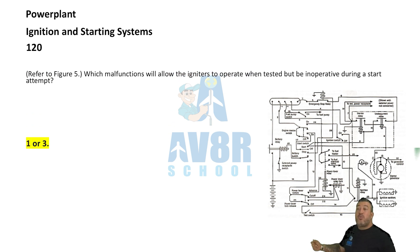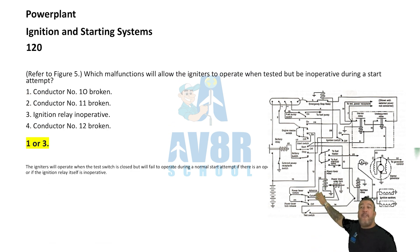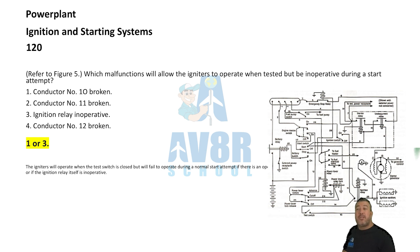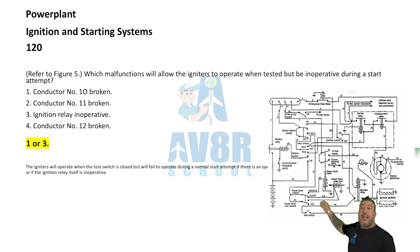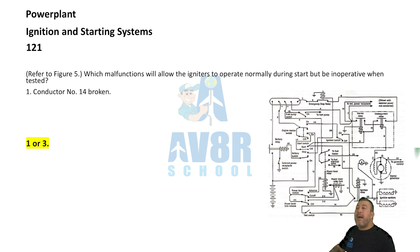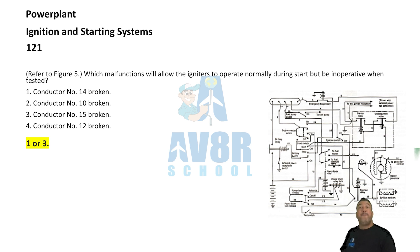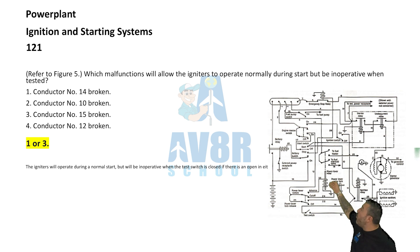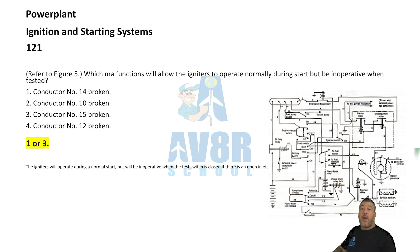Question number 120, referring to figure number five: which malfunction will allow the igniters to operate when tested but be inoperative during a starting attempt? It's one or three — either conductor number 10 is broken or the ignition relay may be inoperative. Number 121, back to figure number five: which malfunction will allow the igniters to operate normally during a start but be inoperative when tested? Once again, it's one and three — conductor number 14 or conductor number 15 may be broken.